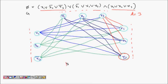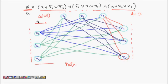This graph construction can be done in polynomial time, so the reduction is polynomial. Now I need to prove that the Boolean formula φ is satisfiable if and only if the constructed graph G has a clique of size k.